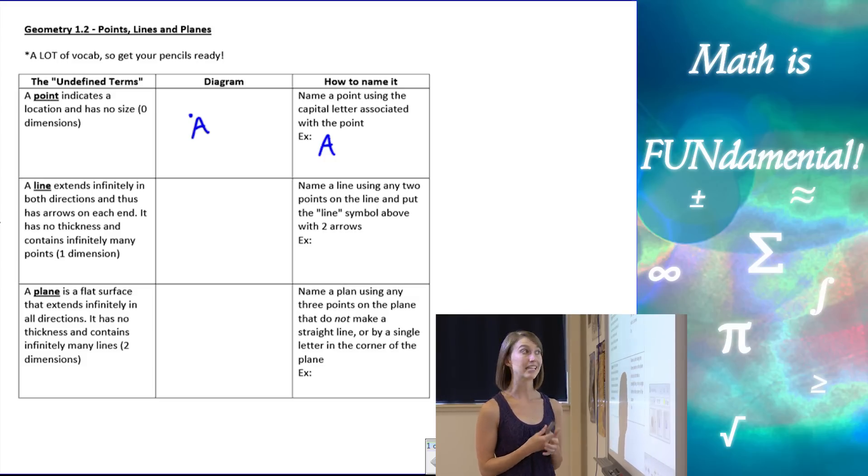Our second vocabulary term is a line, and a line extends infinitely in both directions and it has arrows at the end. So it looks something like this. Now, one other note for a line is that it doesn't have any thickness, even though technically when I draw it on the paper you can see that there's a width. But in math we don't assign any thickness or any dimensions to this line. It extends infinitely in both directions, giving it one dimension but no thickness, so it's not two dimensions.